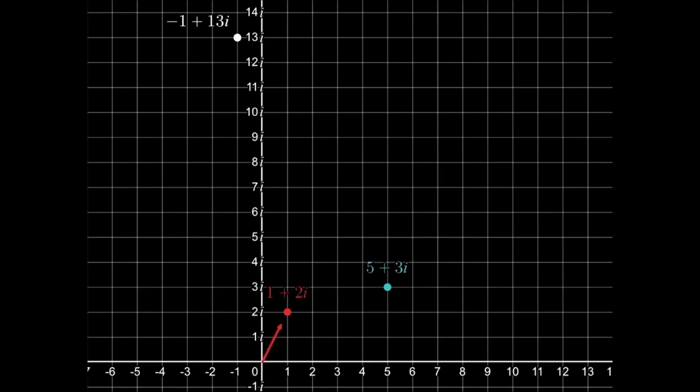Let me plot these numbers. These are the numbers we are multiplying, and this is their product. If you look at this for a long time, you might notice that the product has an angle which is the sum of the angles of the numbers we were multiplying.